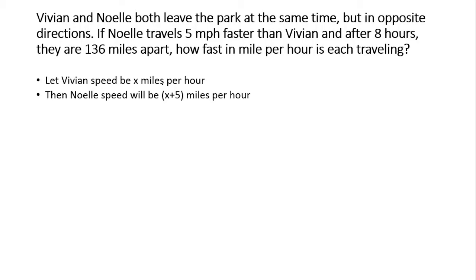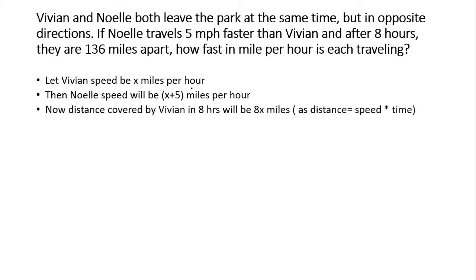Now let us find the distance traveled by Vivian in eight hours. We know that distance is equal to speed multiplied by time. So the distance covered by Vivian in eight hours will be 8x — because x is Vivian's speed and eight hours is the total time. So the total distance covered by Vivian is 8x.